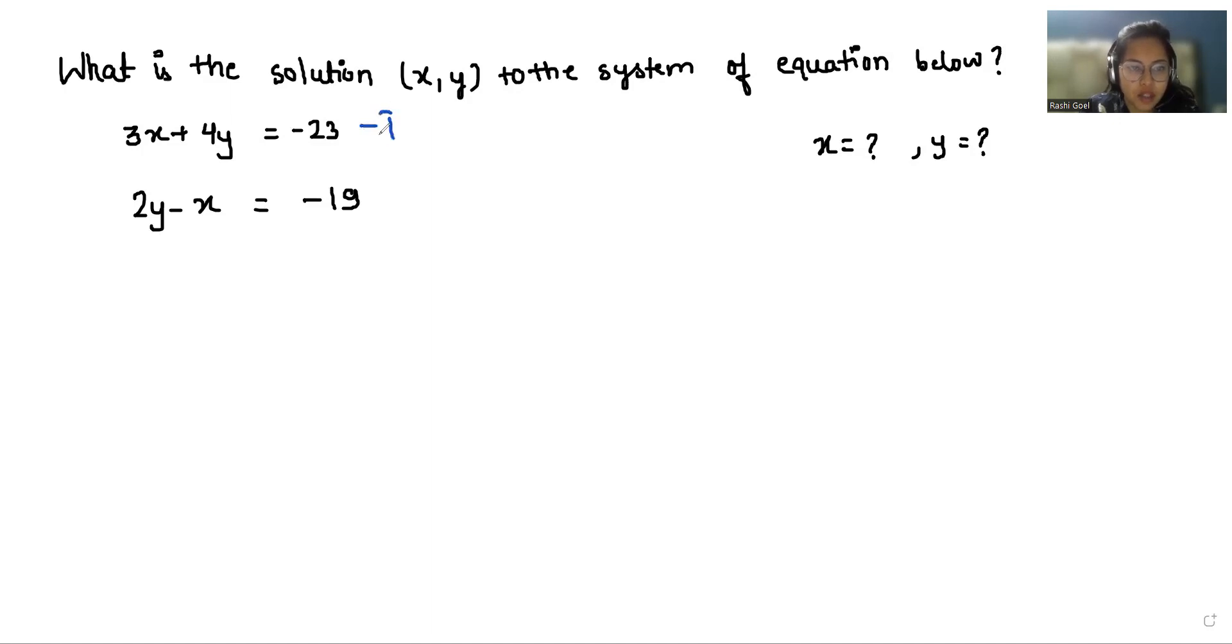So I'm considering this as equation number one and this as equation number two and with the help of equation number two I'm going to find the value of x here. So 2y plus 19 is equals to x.